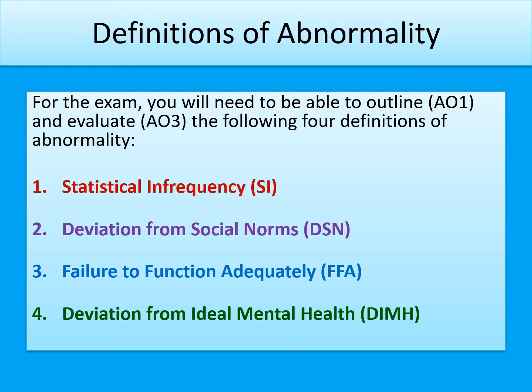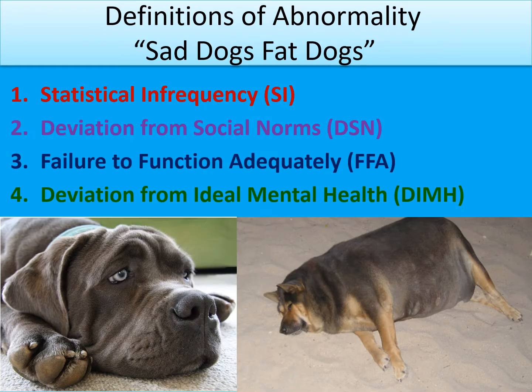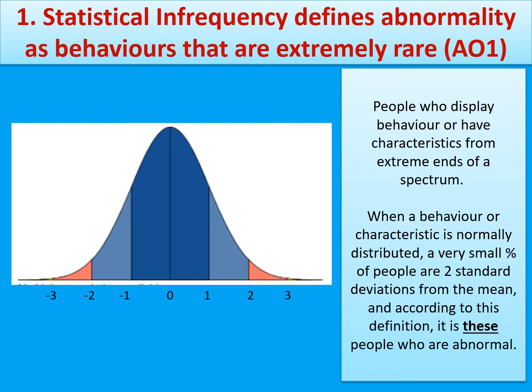The four definitions are called statistical infrequency, deviation from social norms, failure to function adequately, and deviation from ideal mental health. In this video we're just looking at statistical infrequency, but you can remember all four definitions through the mnemonic 'sad dogs, fat dogs' to recall them. Statistical infrequency defines abnormality as behaviours that are extremely rare.